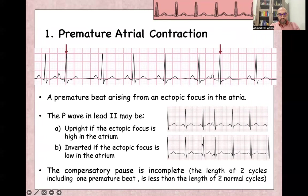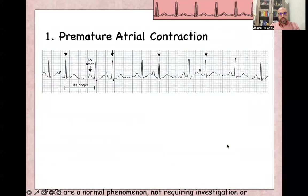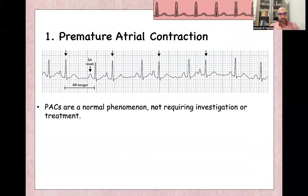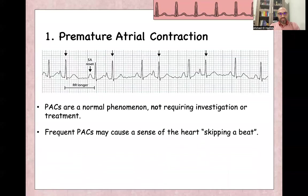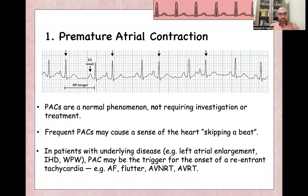The incomplete compensatory pause means the length of two cycles — the premature beat cycle plus the following normal beat cycle — is less than the length of two normal cycles. Premature atrial contraction is a normal phenomenon, usually not requiring any investigation or treatment. Frequent premature atrial contractions may give a sense of skipping beat in the heart. In patients with underlying disease like left atrial enlargement, ischemic heart disease, or Wolff-Parkinson-White syndrome, premature atrial contractions may trigger re-entry tachycardia like atrial flutter, AV nodal re-entry tachycardia, AV re-entry tachycardia, or even atrial fibrillation.